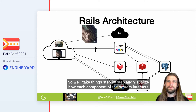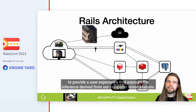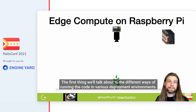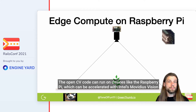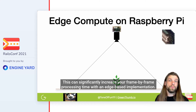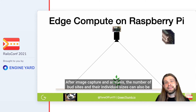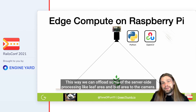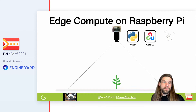It can be overwhelming to view the architecture all at once, so we'll take things step by step and visualize how each component of the system interacts to provide a user experience that exposes the inference derived from our computer vision analysis. The OpenCV code can run on devices like the Raspberry Pi, which can be accelerated with Intel's Movidius vision processing units, or even the new OpenCV AI kit, which has the Movidius Myriad X VPU already integrated. This can significantly increase your frame-by-frame processing time with an edge-based implementation. After image capture and analysis, the number of bud sites and their individual sizes can be reported to the Rails app either through Puma via HTTP request, or Action Cable using a Python WebSocket connection. This way we can offload some server-side processing, like leaf area and bud area, to the camera.